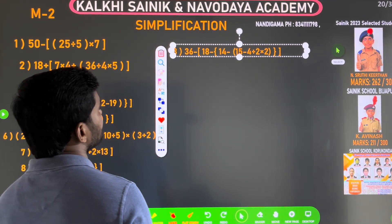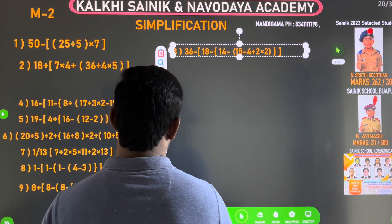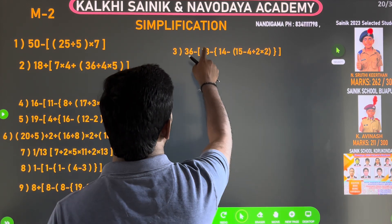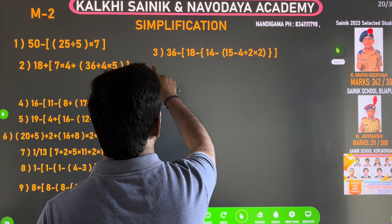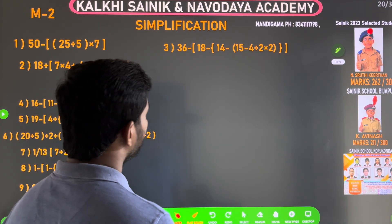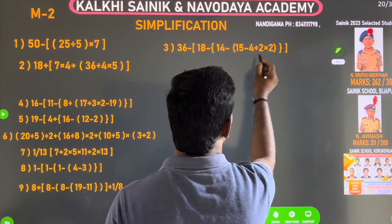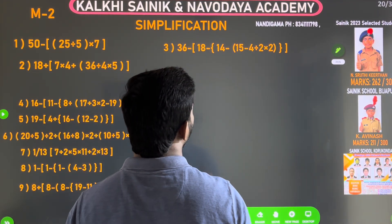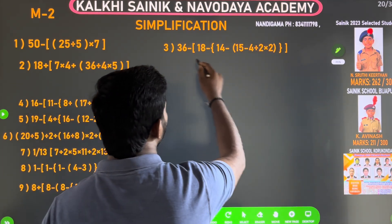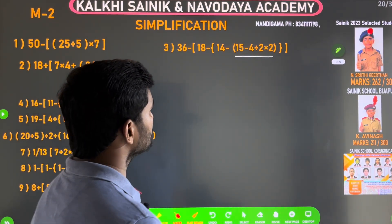The third question is: 36 minus 18 minus 14 minus 15 minus 4 divided by 2. Now let's look at the first curling brackets. After that, let's look at the small brackets. What do we do in this topic? We solve the innermost bracket first.